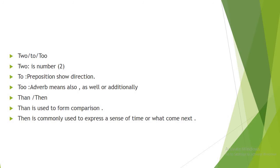Another confusing word: 'two,' 'to,' and 'too.' T-W-O is the number two. T-O is a preposition to show direction. T-O-O is an adverb meaning 'also.' We also have 'than' and 'then.' 'Than' is used to form a comparison. 'Then' with an E is commonly used to express time or what comes next.